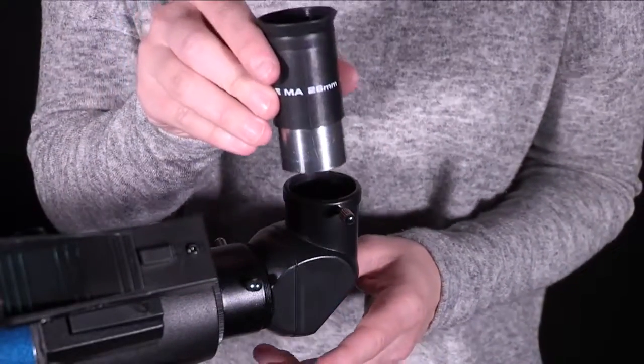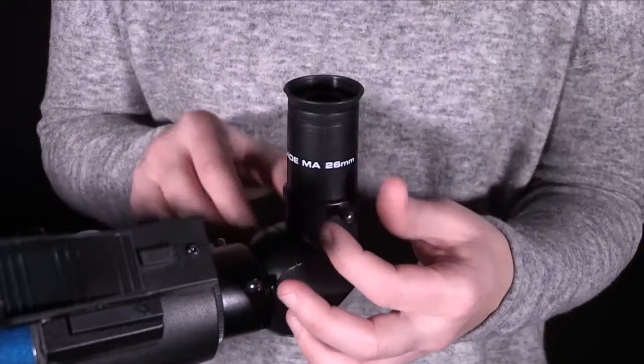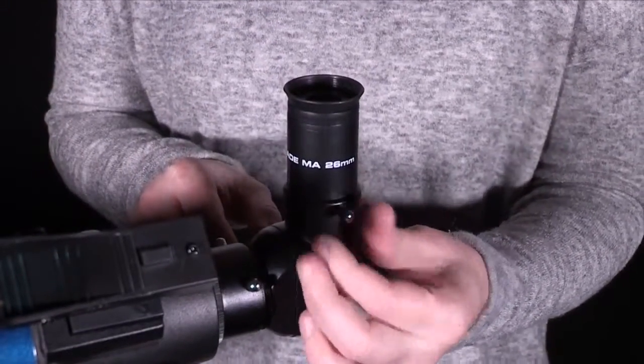Pick up the supplied 26 millimeter eyepiece from its container and place it in the erect image prism or directly into the eyepiece holder for other models. Tighten the thumb screws to a firm feel.